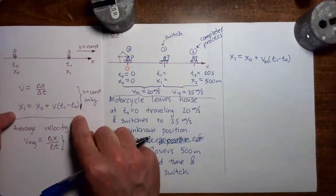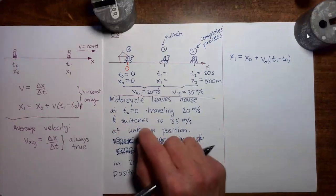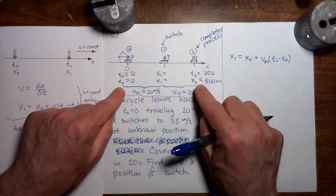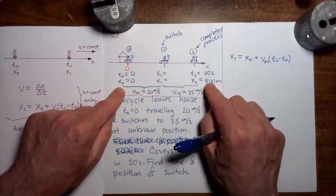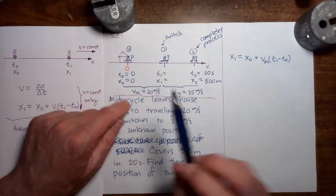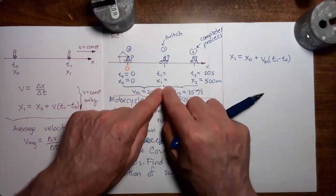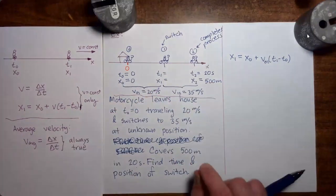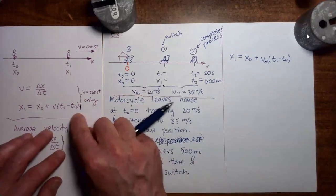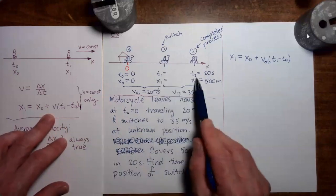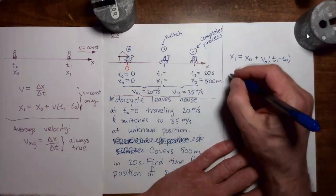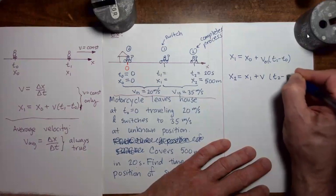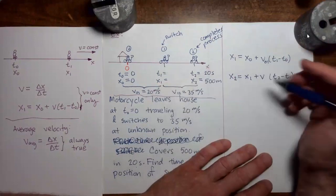This equation applies any time we have a constant velocity process. From moment zero to moment one is a constant velocity process — we can use the equation. From moment zero all the way to moment two is not, because the velocity changes in the middle. But from moment one to moment two is a constant velocity process, so we can use the equation again with changed subscripts. Taking that same equation but changing the subscripts, I have x2 equals x1 plus v times (t2 minus t1), where the velocity is V12.